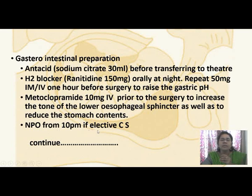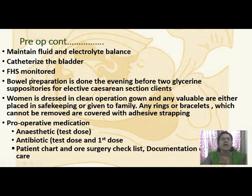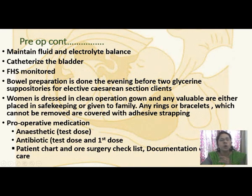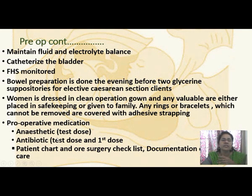The patient should be NPO from 10 p.m. if an elective caesarean section is planned. Fluid and electrolyte balance should be maintained. The bladder should be emptied by catheterization on the day of operation. FHR monitoring should be continuously done and bowel preparation — two glycerine suppositories — is done in the evening before the elective caesarean section. The patient is dressed in a clean operative gown. Valuables are placed in safekeeping or given to family; rings or bracelets that cannot be removed are covered with adhesive tape.